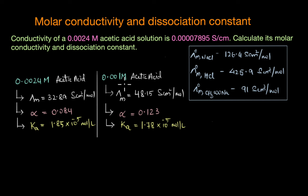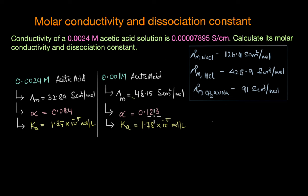A more diluted acetic acid solution would be expected to have an increased molar conductivity — with more dilution, molar conductivity is supposed to increase. Indeed, a 0.001 molar acetic acid solution has a molar conductivity of 48.15 cm² per mole, higher than our value. Similarly, the degree of dissociation is also higher at 0.123 compared to 0.084. The dissociation constant, however, is almost similar, since Ka is more of an intrinsic property that indicates how strong an electrolyte is and doesn't really change with concentration.